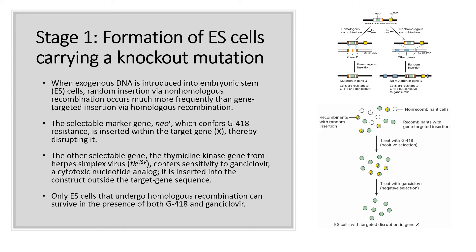Only embryonic stem cells that undergo homologous recombination can survive in the presence of both G418 and gancyclovir. In these cells, one allele of gene X will be disrupted.